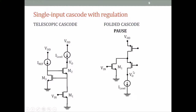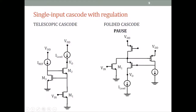Now we want to add regulation. What we need to do is connect a common source amplifier around the common gate stage — the cascode transistor. The common source amplifier will also be a PMOS. We take the source of this PMOS, connect it to the gate of the common source amplifier, and the drain of that common source we connect back to the gate. This is a folded cascode amplifier with regulation and ideal current sources as loads. The current source for the common source amplifier is simply a single transistor — NMOS here, PMOS there.